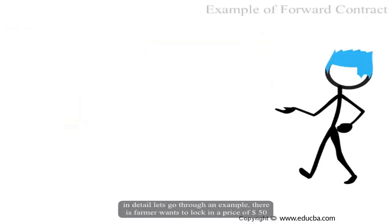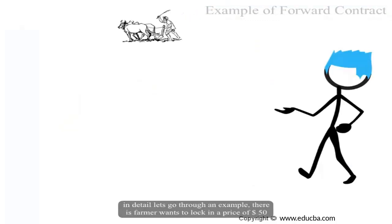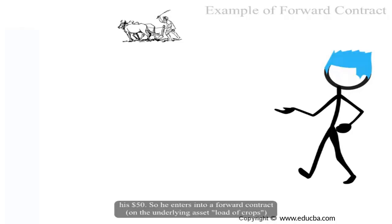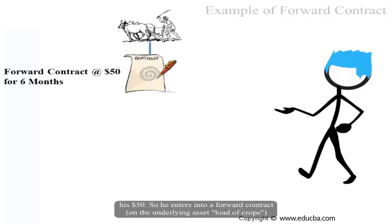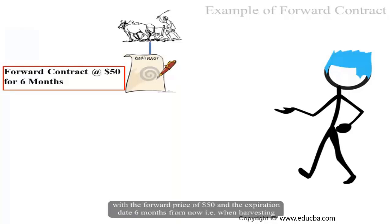To understand this in detail, let's go through an example. There is a farmer who wants to lock in a price of $50 for a load of crops. He is afraid that the price will drop and he will get less than $50. So he enters into a forward contract on the underlying asset — a load of crops — with a forward price of $50 and an expiration date of 6 months from now, when the harvesting begins.